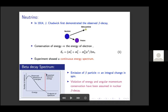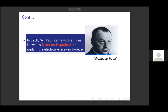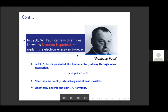Experiments showed not that discrete number but a continuous spectrum — a clear violation of conservation of energy in beta decay. Similarly, the emission of beta particles shows an integral change in spin, also a clear violation of angular momentum conservation. During that time people thought maybe energy conservation and angular momentum were not maintained in this kind of decay process. People were loosely trying to convince themselves that maybe these two were violated in beta decay.